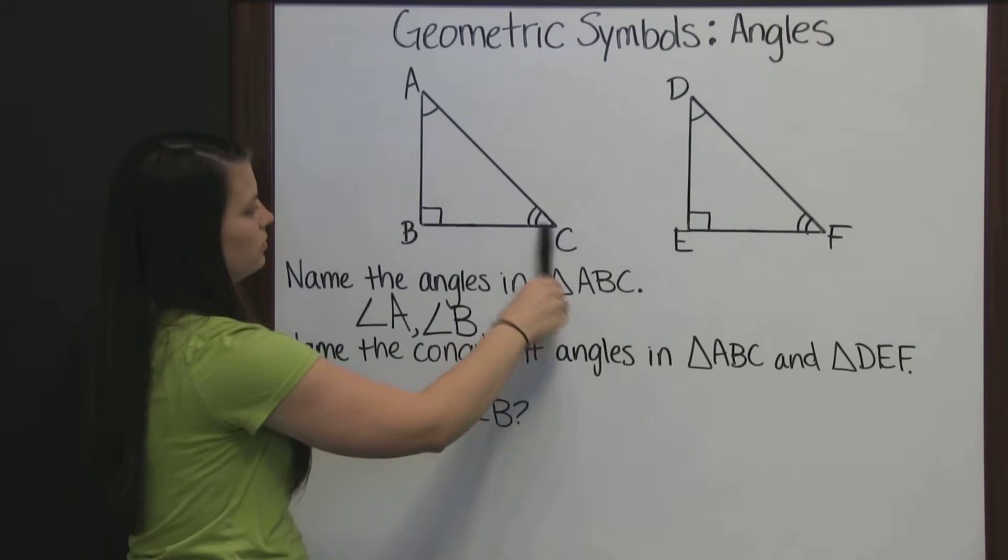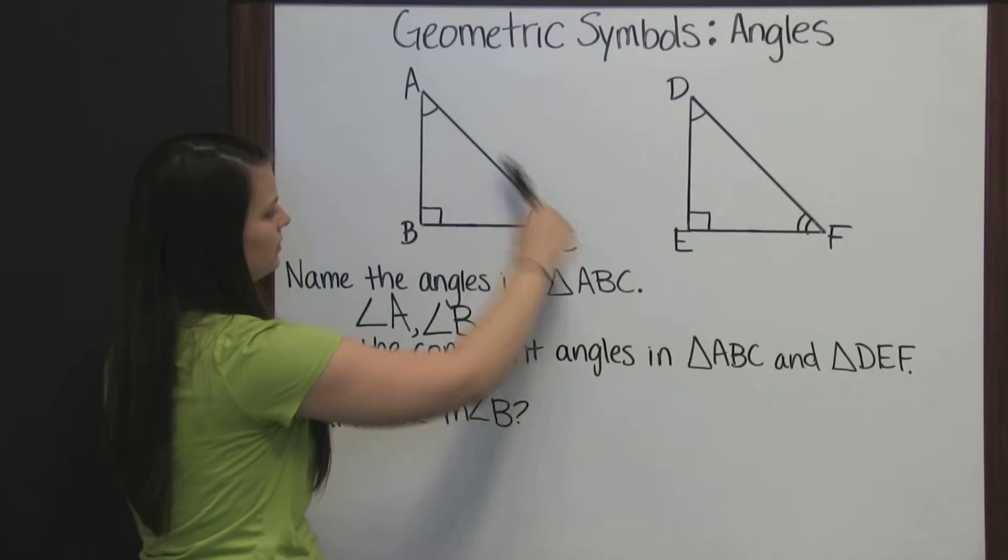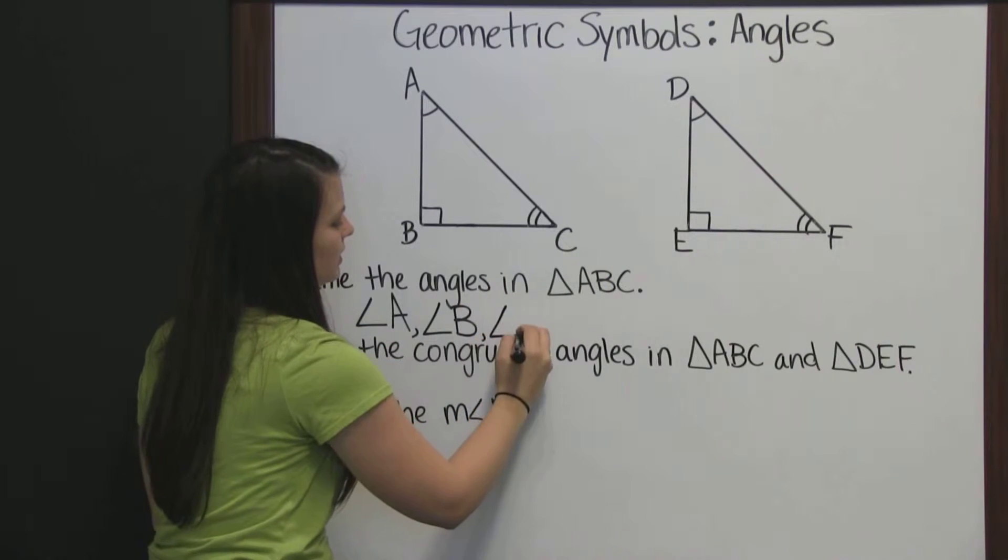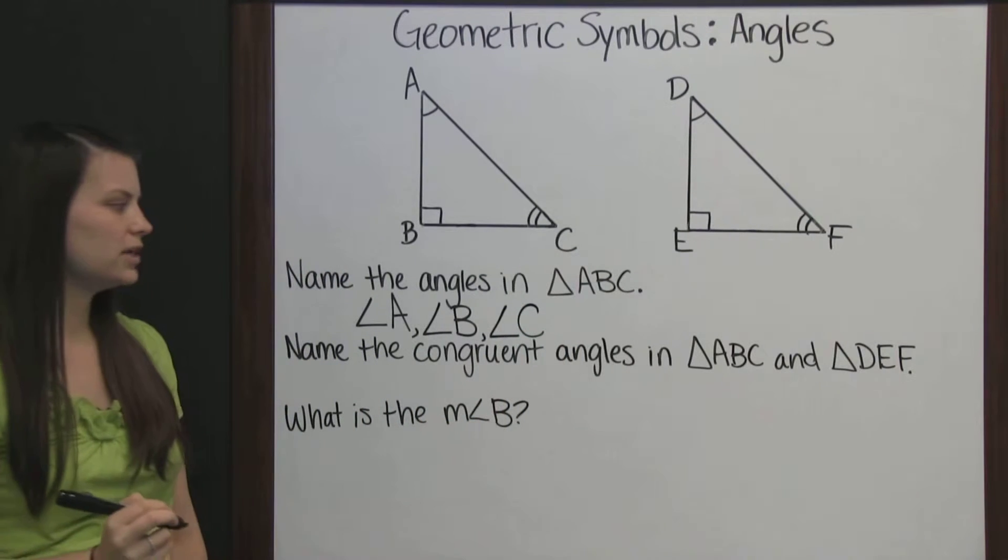The last angle would be angle C. Again, this is the angle symbol and you name it by its vertex.